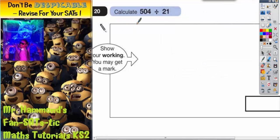Question 20. Calculate 504 divided by 21. Anytime you see a divided by and it is divided by a number bigger than 10, you should really be using the chunking method.